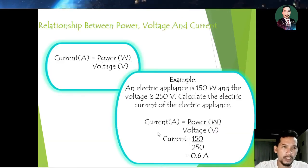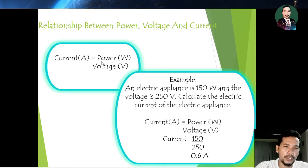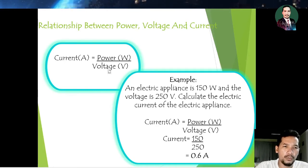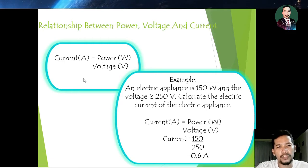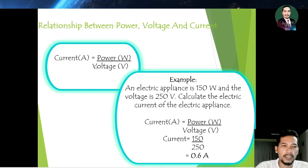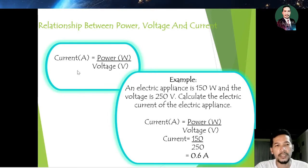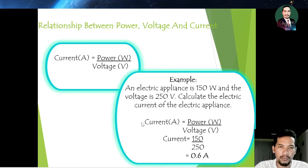Next is the formula. The relationship between power, voltage, and current is shown in the formula below. Current is equal to power divided by voltage. We can also rearrange the formula to solve for voltage or power depending on what we need. You need to understand the positions of current, power, and voltage in the formula.